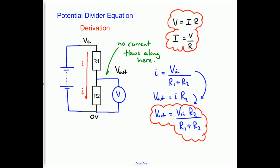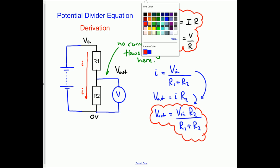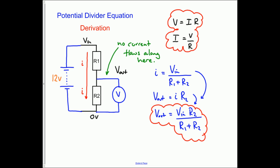Let's do a numerical example. We'll make this 12 volts. We'll make this resistor down here, let's say 18k. We'll make this resistor up here, let's say 6k. And the question is, what does the voltmeter read?